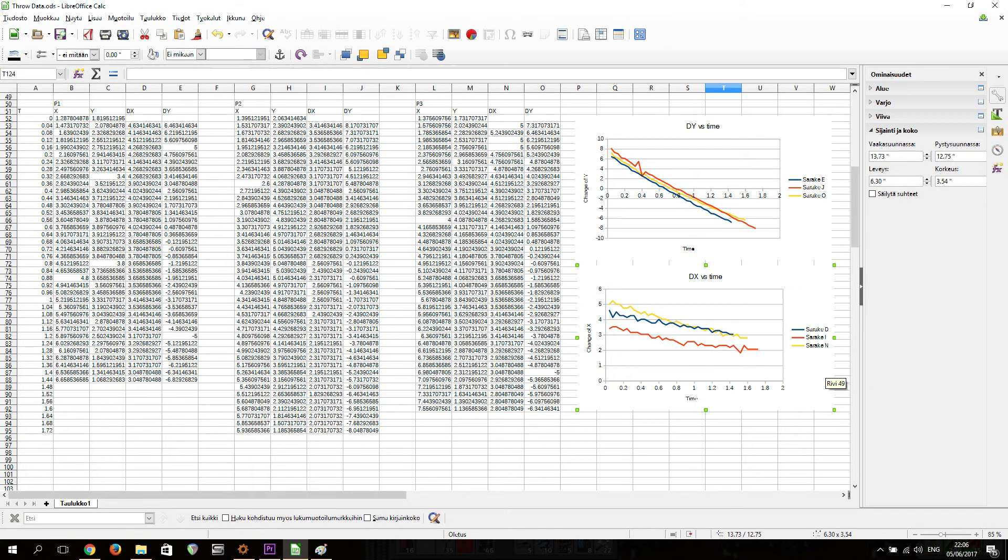Then I subtracted the previous value from next for each location in vertical and horizontal location, effectively measuring the change in location over time. This way I got the speed in both directions the ball was traveling.